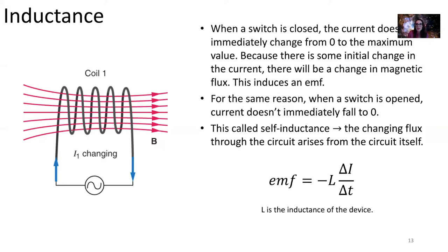Self-inductance is when a changing flux through a circuit arises from the circuit itself. It generates its own EMF because there's a changing flux of magnetism from the current in the circuit.